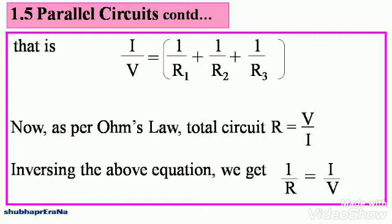Now, as per Ohm's law, total circuit resistance, that is R, is equal to V divided by I. You know this from the previous topic discussions. Inversing the above equation, we get 1 divided by R, inverse the right hand side as well, you get I by V. Note this down.